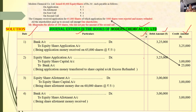Application money transferred to share capital: equity share application account debit 3,25,000, to equity share capital account credit 3,00,000 and to bank account credit 25,000, being refund of excess application money. Debit means 'comes in,' credit means 'goes out' — that is why bank is credited for the refund.